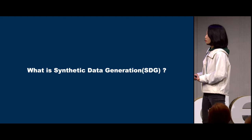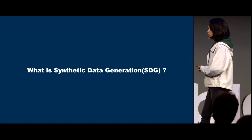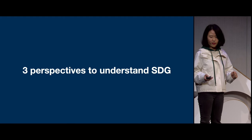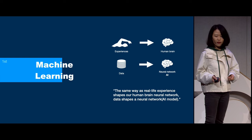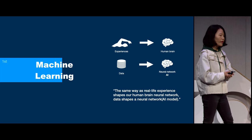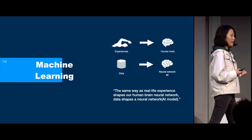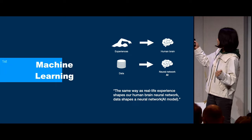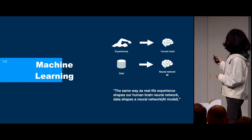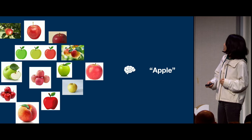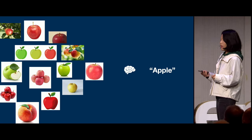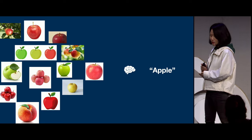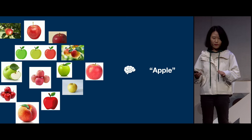The first question is: what is synthetic data generation? There are three perspectives to understand SDG. The first is the machine learning view. The basic idea is that just as real-life experiences shape our human brain, data shapes a neural network — which is AI. If we're going to teach our AI to recognize an apple, we want to give it a lot of images of apples. Simply put: if there is data, there is a model; if no data, no model.